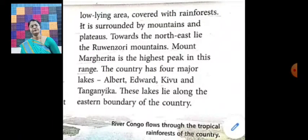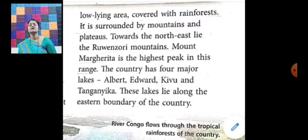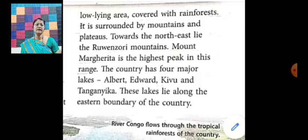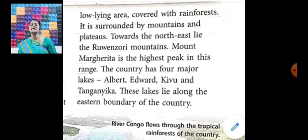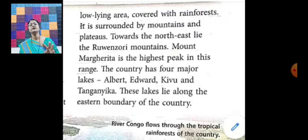The river basin is a vast low-lying area covered with rain forest — warsha waala jangal. DRC is surrounded by mountains and plateaus on all sides — charo taraf se mountains aur plateaus se ghiri hui hai.